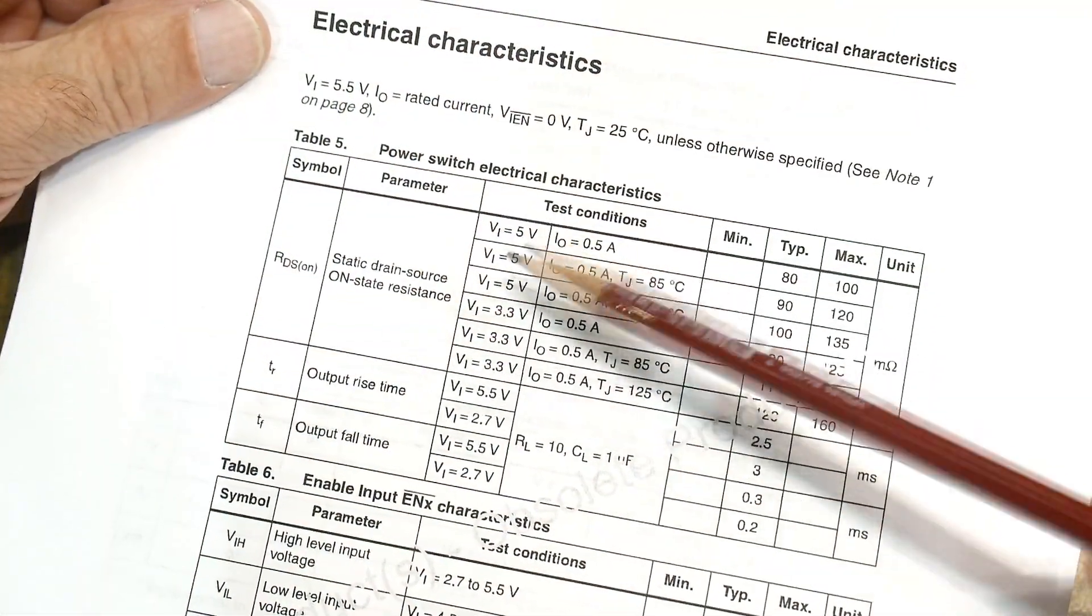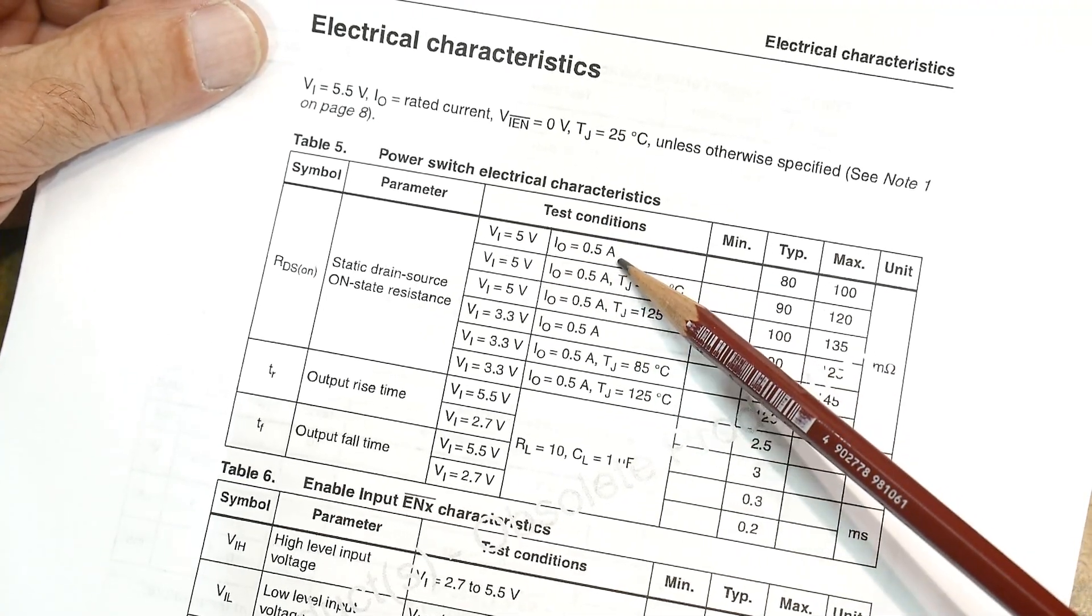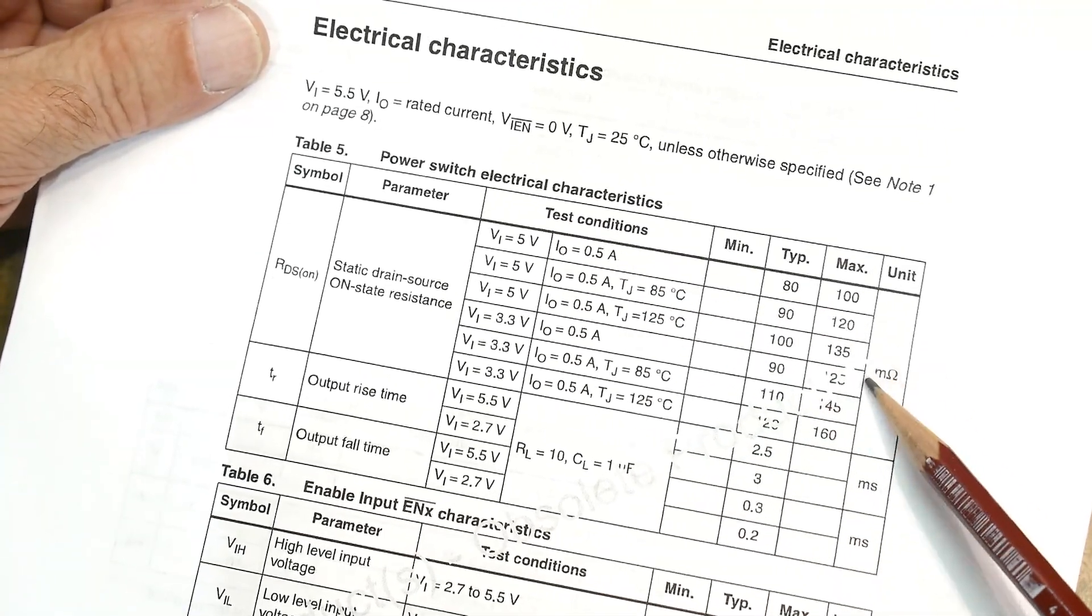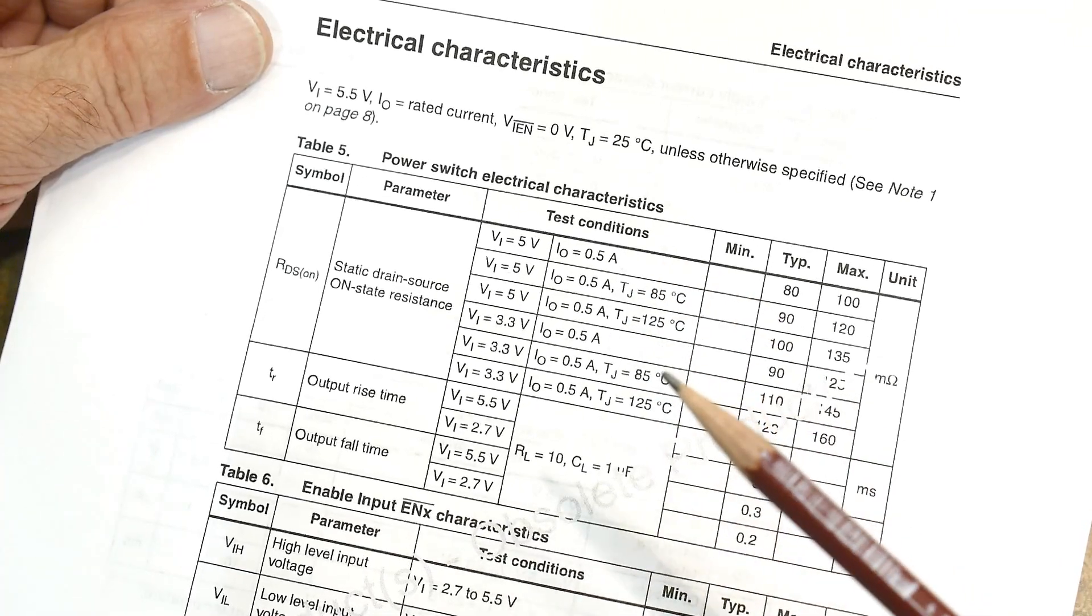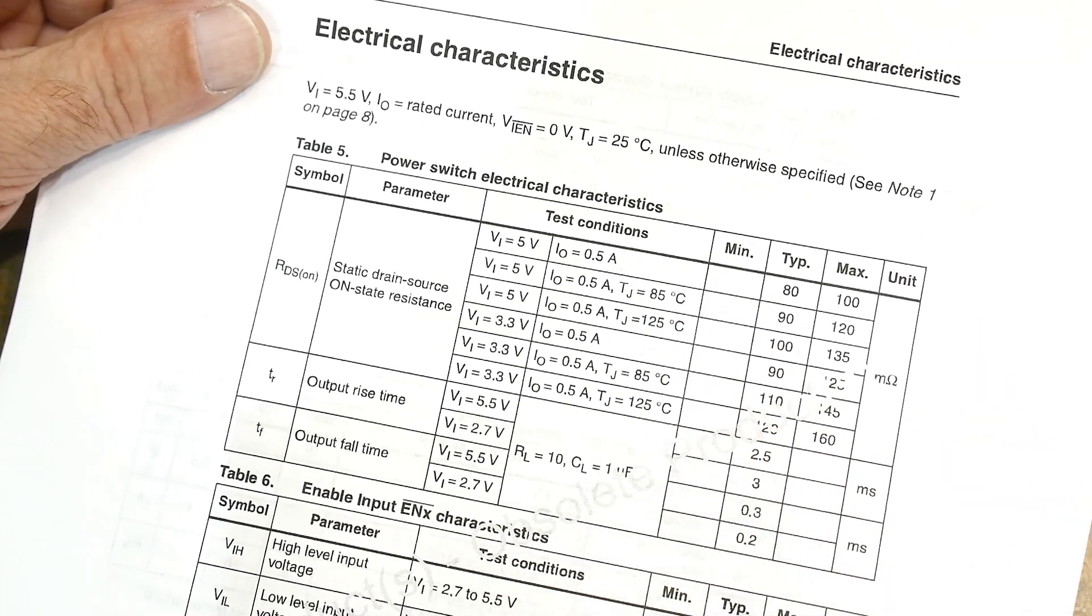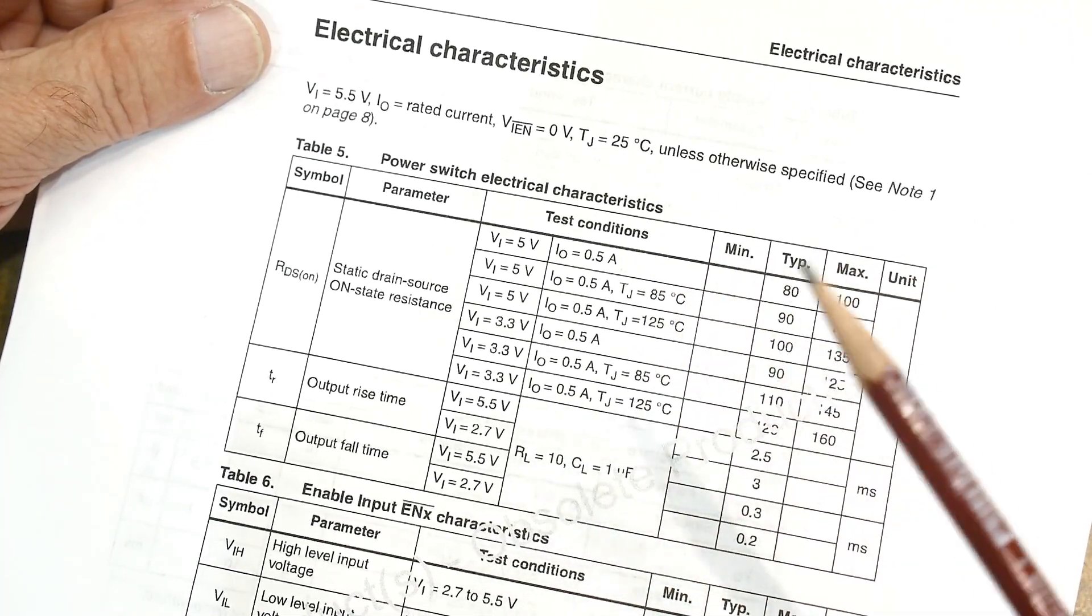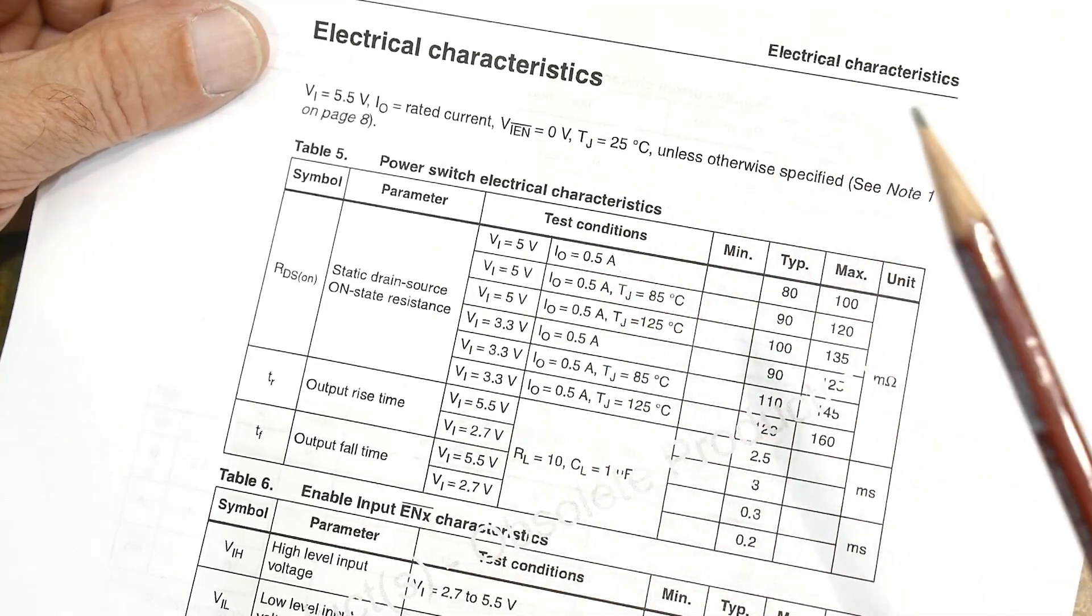Static on resistance, 5 volts, half an amp, 80 milliohms, half an amp. I'm just not measuring that, so I don't know. Something weird's going on.